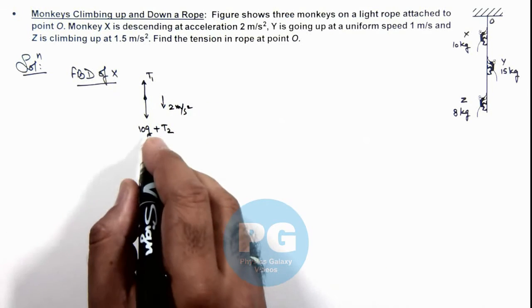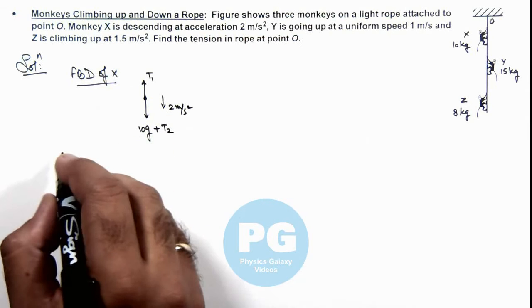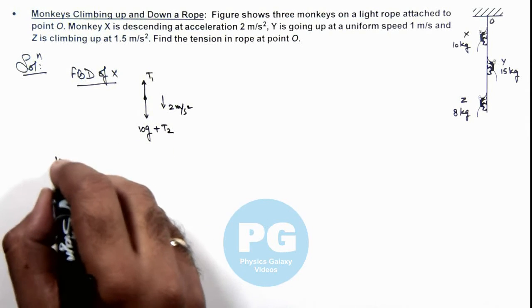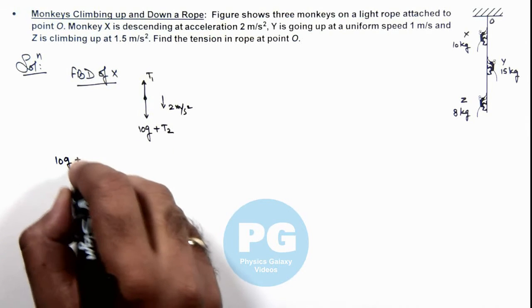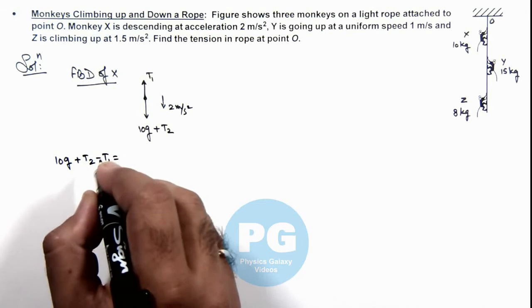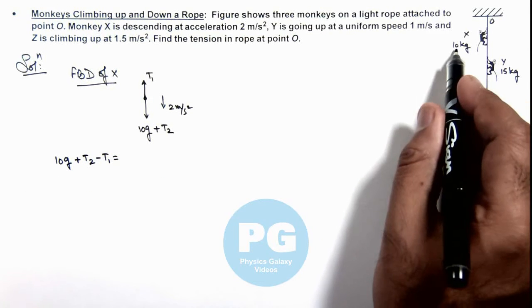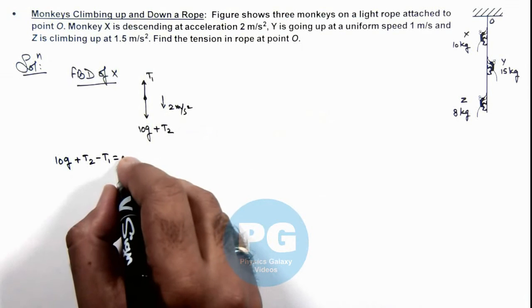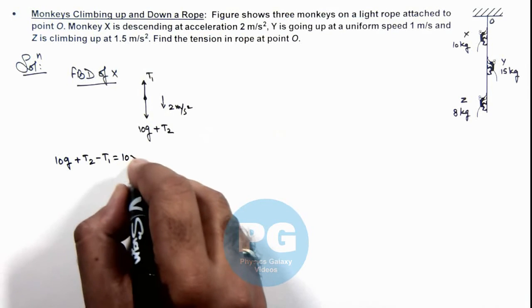So if we write the equation of motion of this monkey we can write it as 10g plus T2 minus T1 equals m*a_y. Its mass is 10 kilograms and its acceleration is 2, so this will be 10 multiplied by 2.